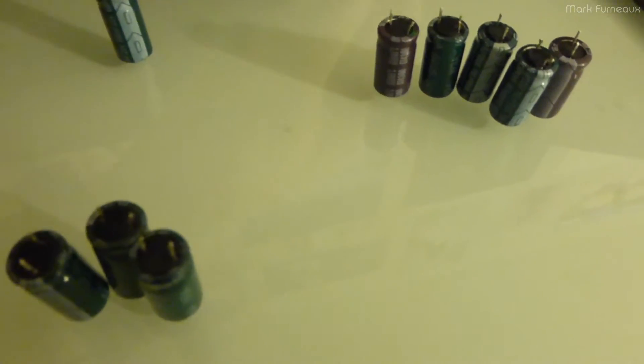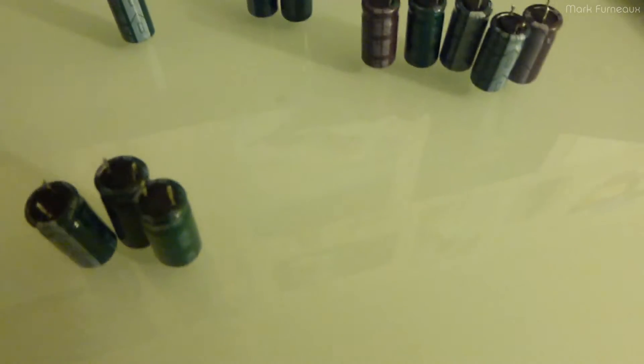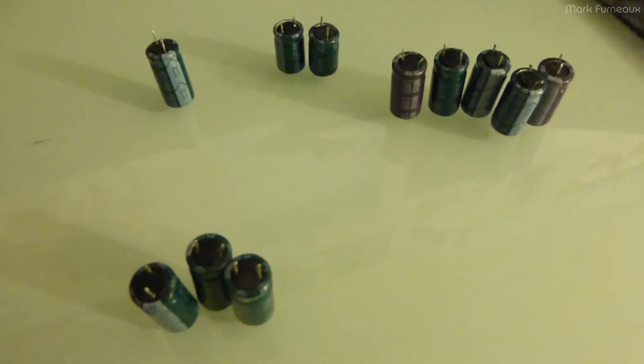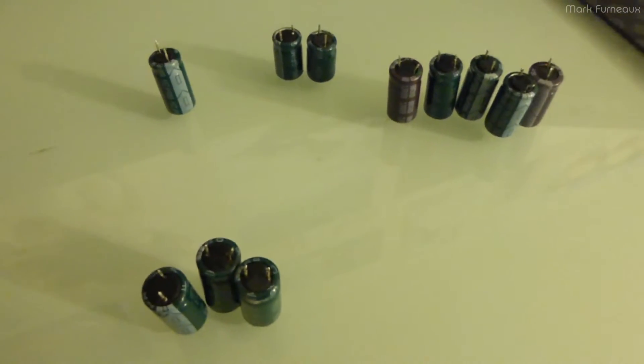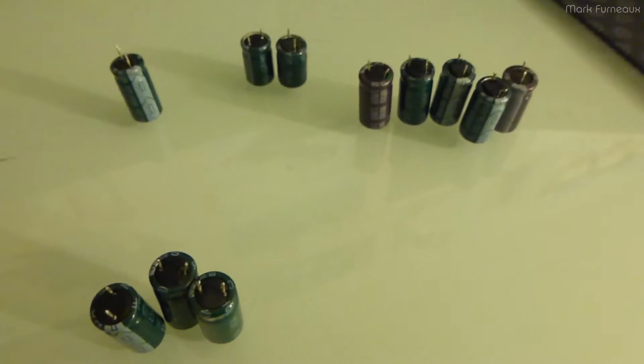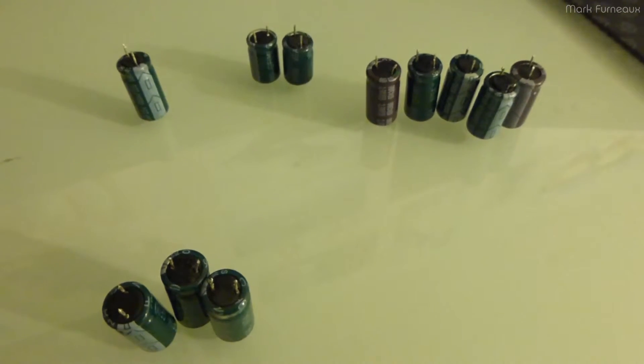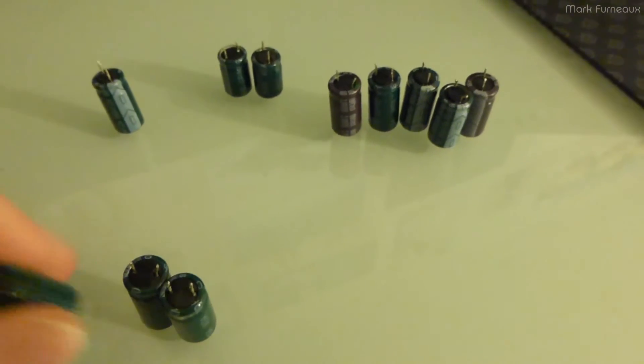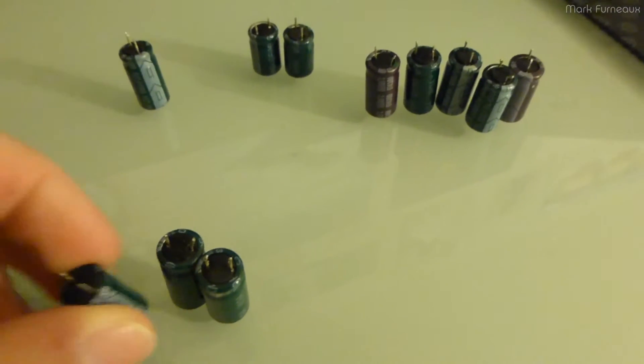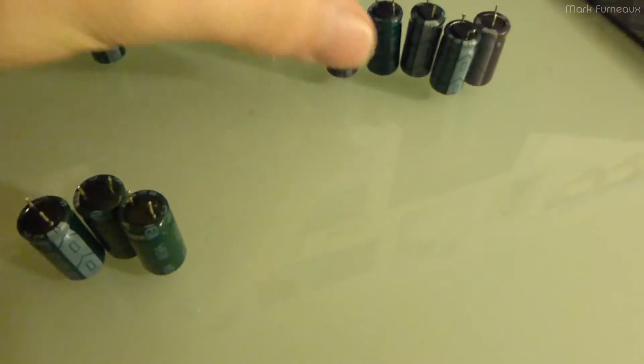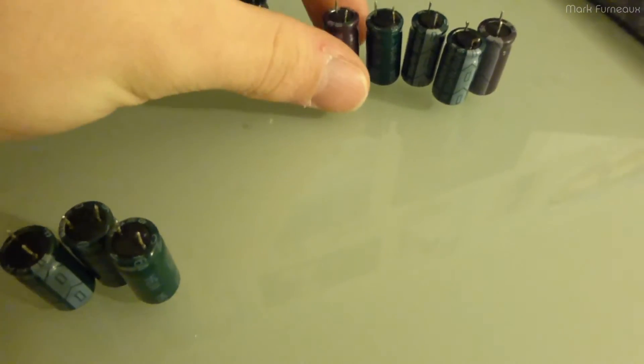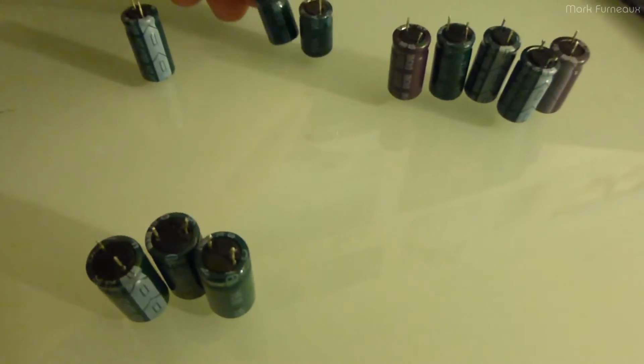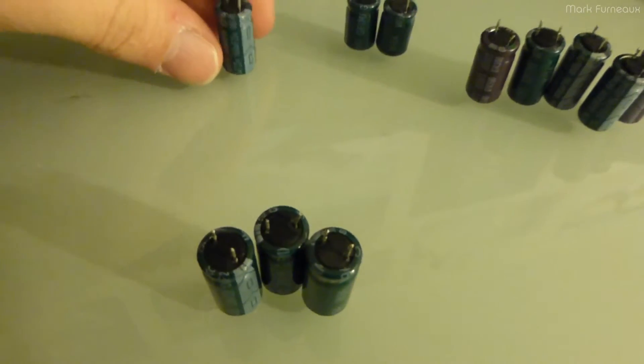On this side, again organized by size, we have the capacitors which didn't measure as a capacitor at all. These ones are completely open or they're so leaky that they're basically shorted. Here we have the 1000 at 25, these would be the 1000 at 16, and then we've got the 470s and the 680.